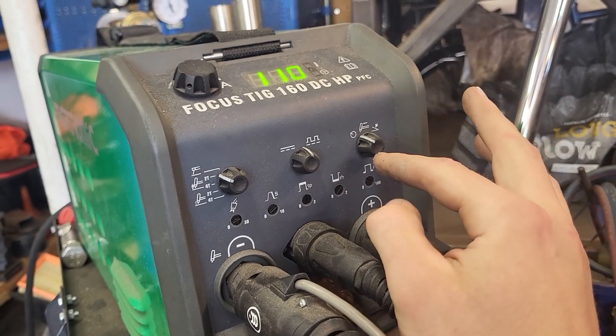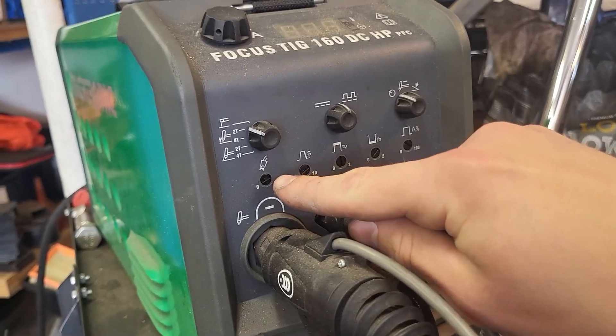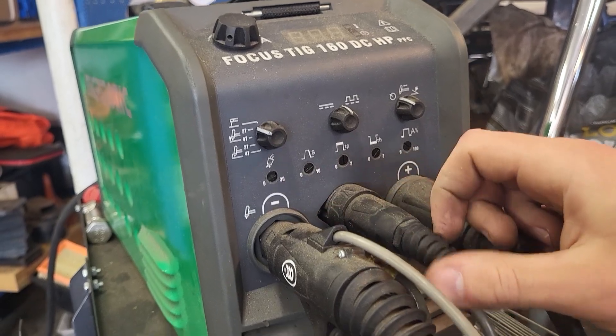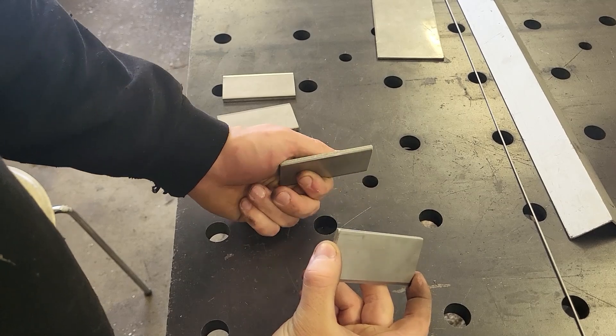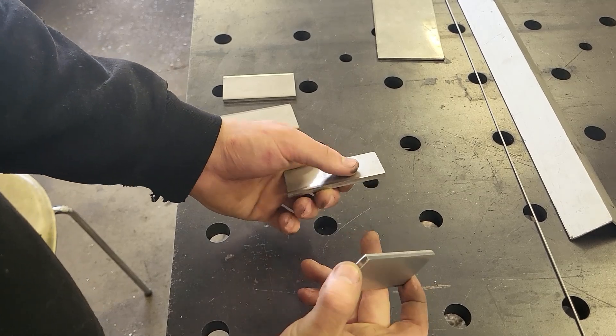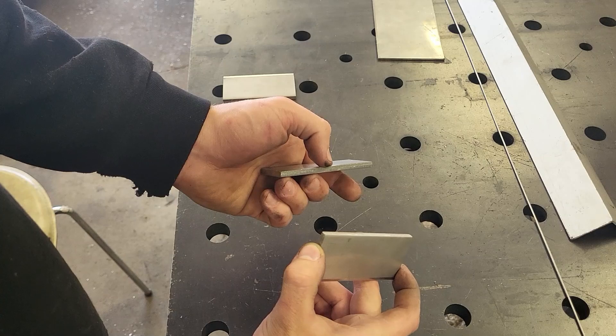You can adjust how you turn on the welder. You can also adjust the aftergas, which is how long the gas flows after you've terminated a weld. After you've cleaned your materials and figured out how your machine starts and works, it's time to do some welding joints.